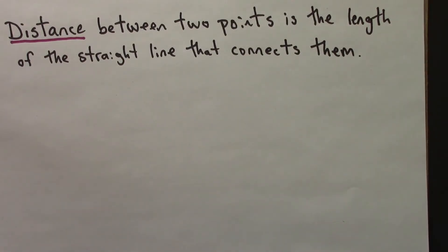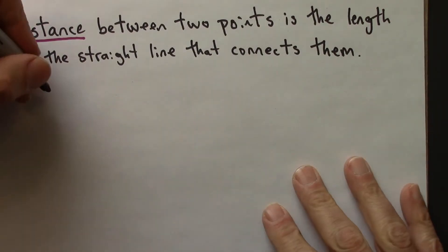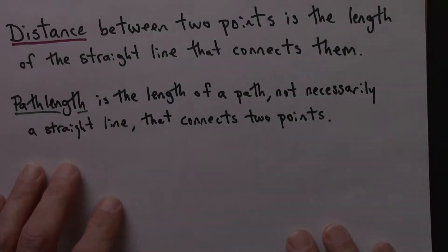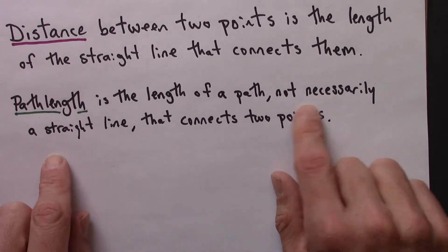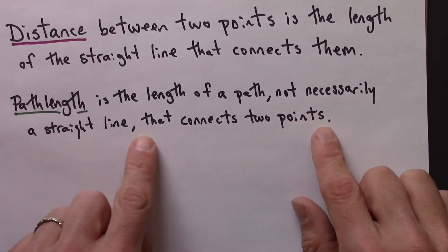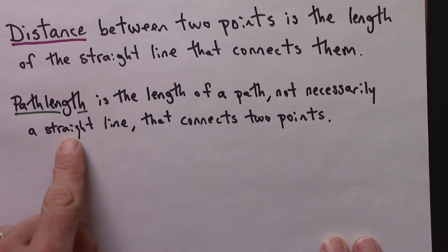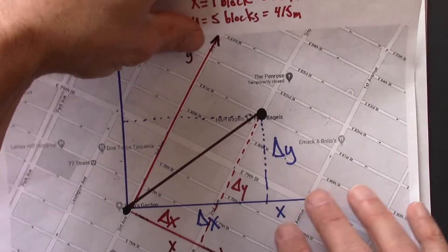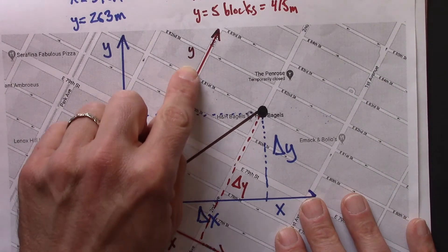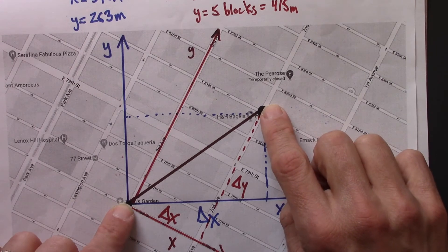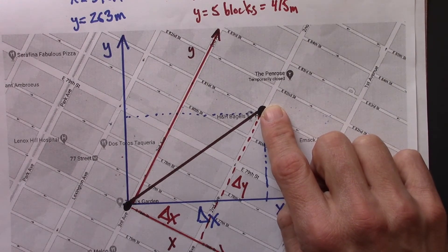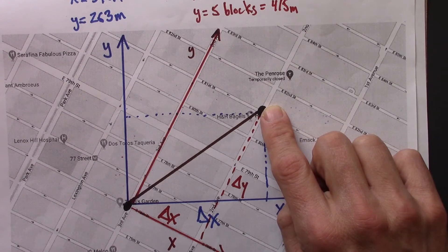The path length, as its name suggests, is the length of a path. And it's not necessarily a straight line, but it's some other route, some other way of connecting those two points. It could be this way, it could be this way. Any way of connecting those two points defines a path. And then you just find the length of that path, and that's what would be called the path length.